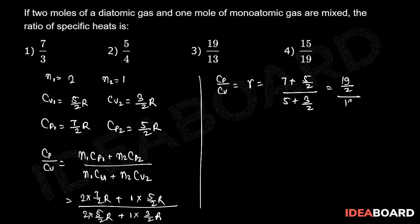which is equal to 19 by 13. Therefore we can write CP by CV is equal to 19 by 13. So option number 3 is the correct answer of this problem.